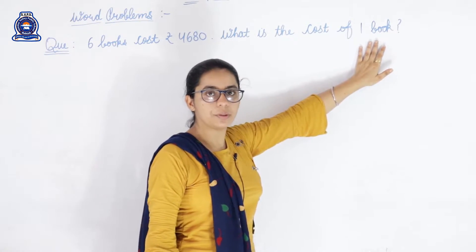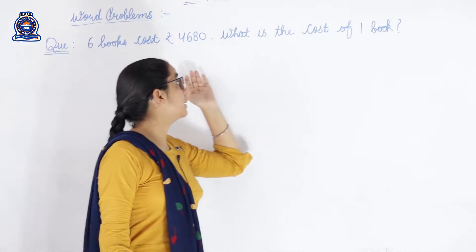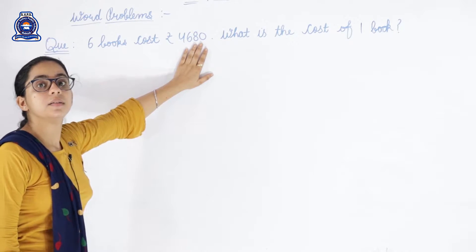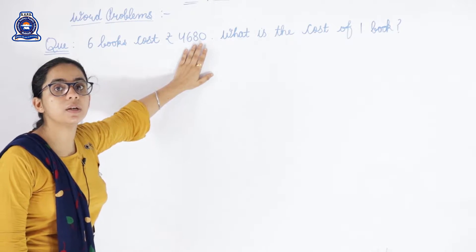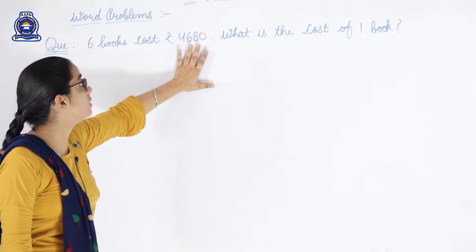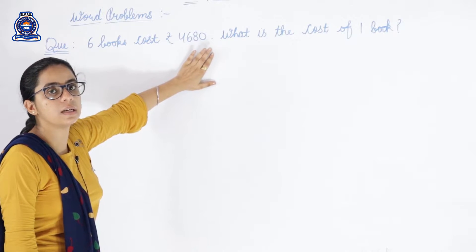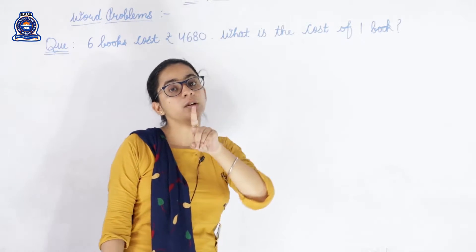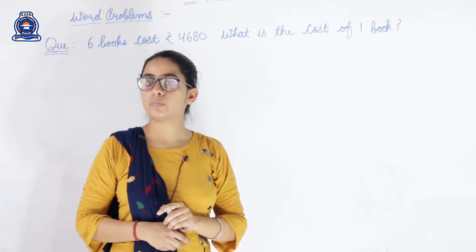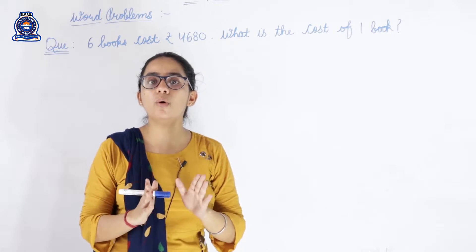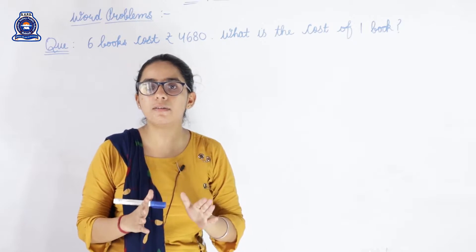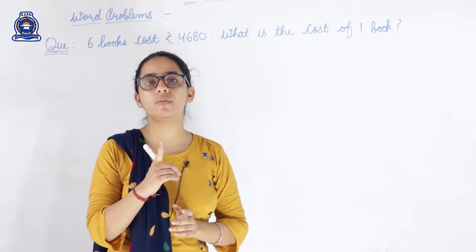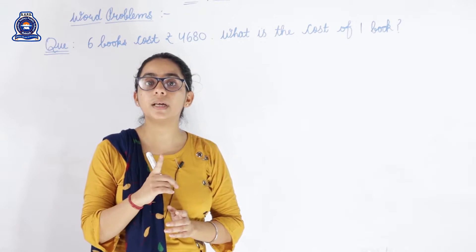So, here we are given the cost of six books. The cost of six books is four thousand six hundred eighty. And we have to find out the cost of one book. When we are given the value of more than one and have to find the value of one, what do we do?